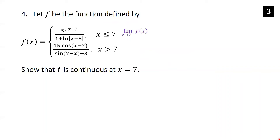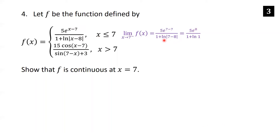For the left-hand limit as x approaches 7, we plug into the first piece. At x=7: 5e^(7−7) = 5e^0 = 5 in the numerator, and ln|7−8| = ln(1) = 0 in the denominator, giving 1 + 0 = 1. So the left-hand limit equals 5/1 = 5.